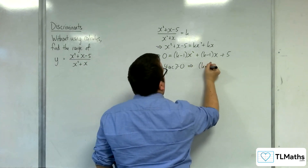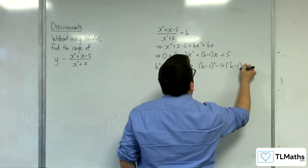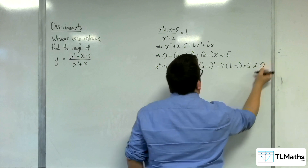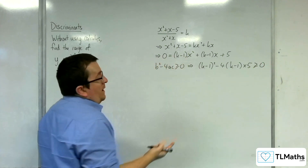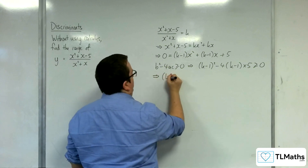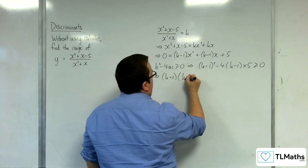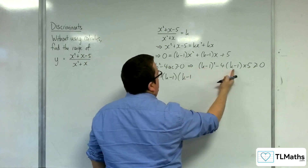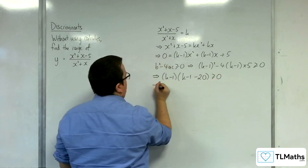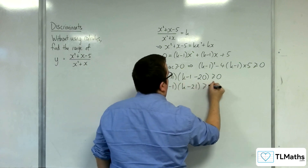So, that implies that we're going to have k minus 1 squared take away 4 lots of k minus 1 times 5. Now, what we can do here is, rather than expanding brackets out, I can factor the k minus 1 out of a single bracket already, because it's common to both terms. And I'd have k minus 1 times k minus 1 take away 20, which is greater than or equal to 0. So, k minus 1 times k minus 21 is greater than or equal to 0.